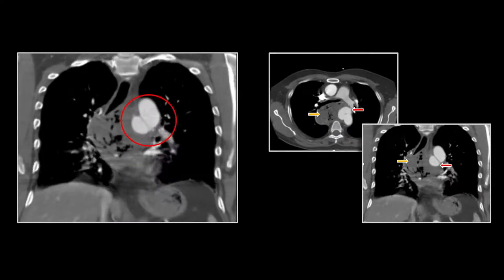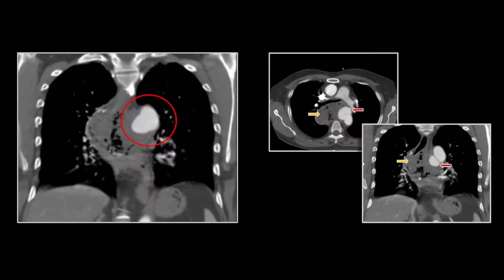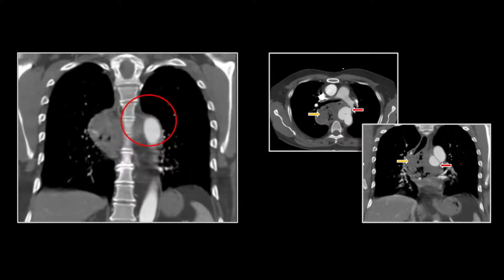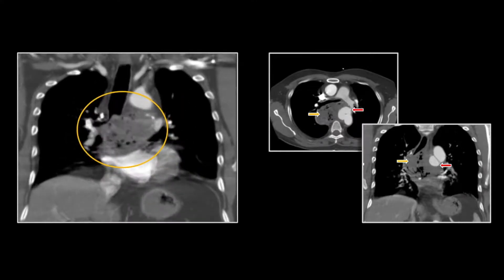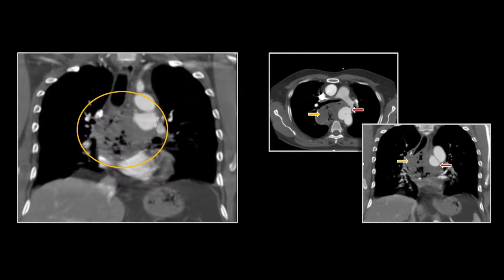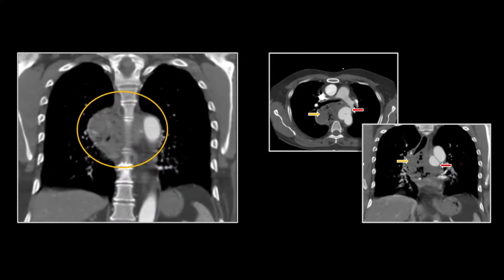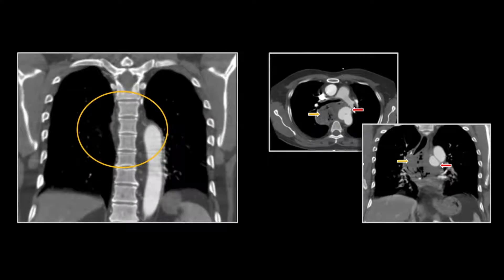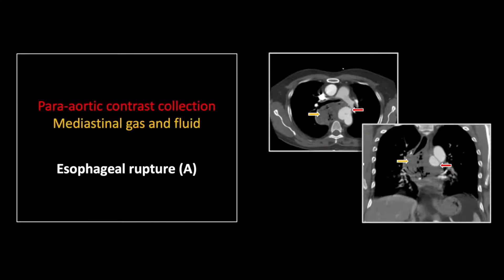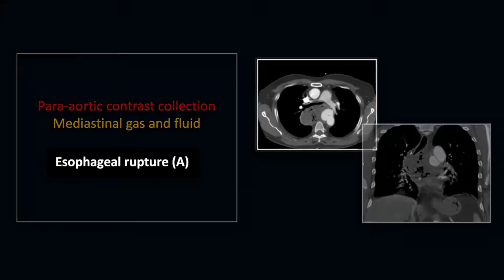There on the coronal is the pseudoaneurysm related to the aortic laceration, and a good view of the circumscribed collection of gas and fluid with the entrance and exit of the proximal and distal aspects of the esophagus. So that is an esophageal rupture with an associated aortic laceration.